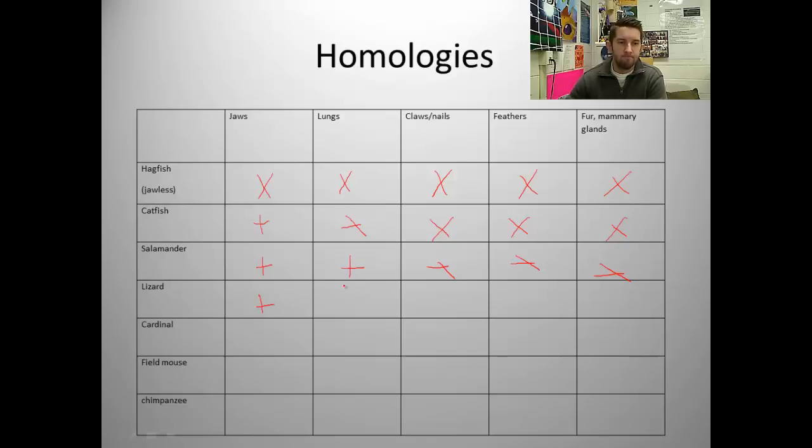Lizard - jaws, lungs, claws or nails yes, feathers no, no fur. A cardinal - yes to jaws, has lungs, you can hear a cardinal sing, claws and nails yes, feathers yes, mammary glands no. A field mouse - jaws, lungs, claws and nails, no feathers, and fur obviously it does. Chimpanzee - jaws, lungs, nails, no feathers, and fur.